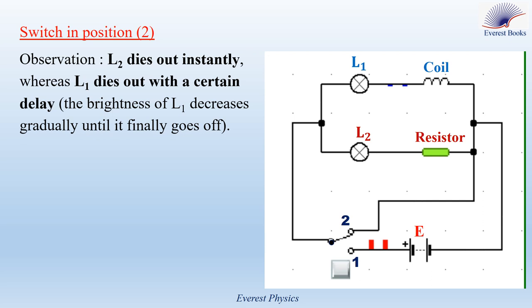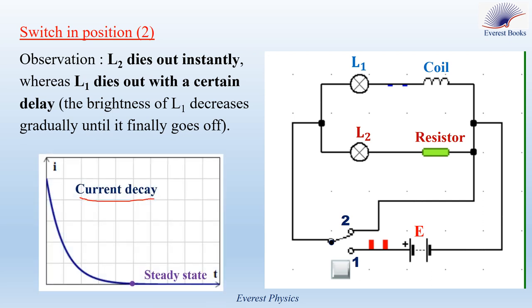Now look at the graph. The graph shows you the current decay. The current decreases from its maximum value until it finally becomes zero.